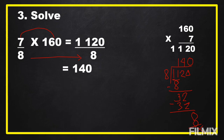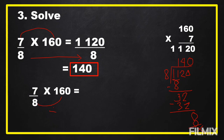So our answer is equal to 140. Another way of getting the answer is to divide the whole number by the denominator: 160 divided by 8 equals 20. Then multiply this quotient by the numerator 7: 20 times 7 equals 140. We get the same answer with a different solution, so it's up to you which way you will use in solving this kind of problem.